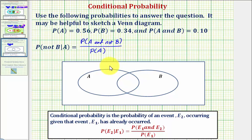Now let's go ahead and complete our Venn diagram using the given probabilities. We'll start with the intersection of A and B. The probability of A and B equals 0.1, which would be the probability of being in this region here.